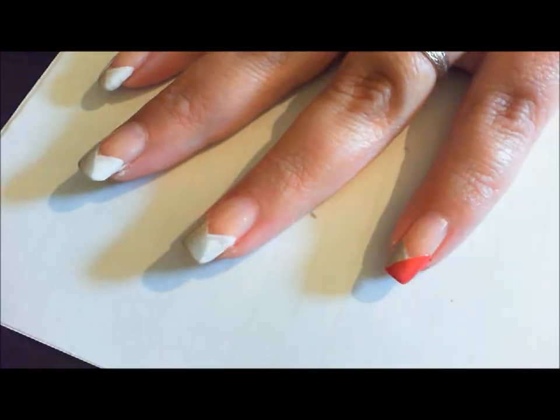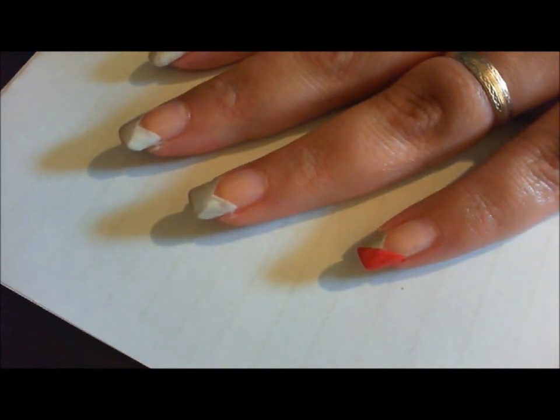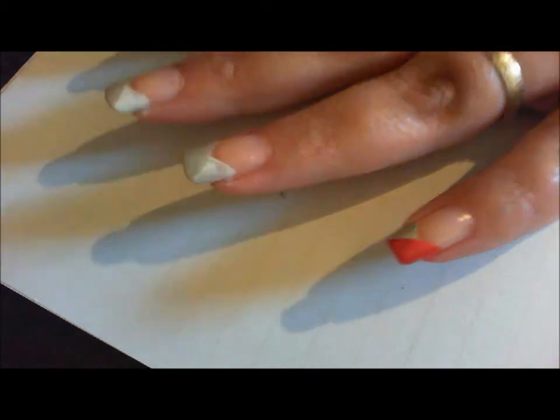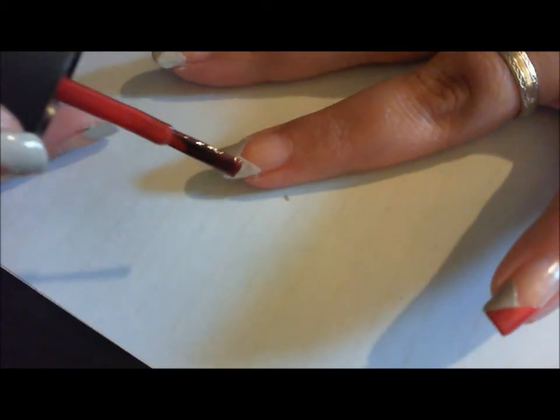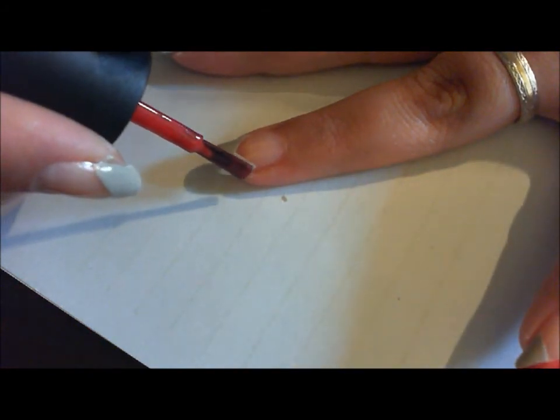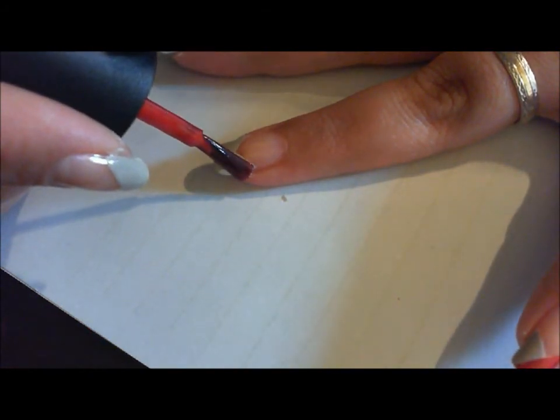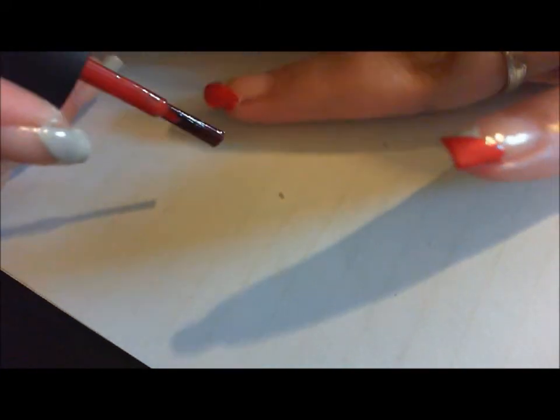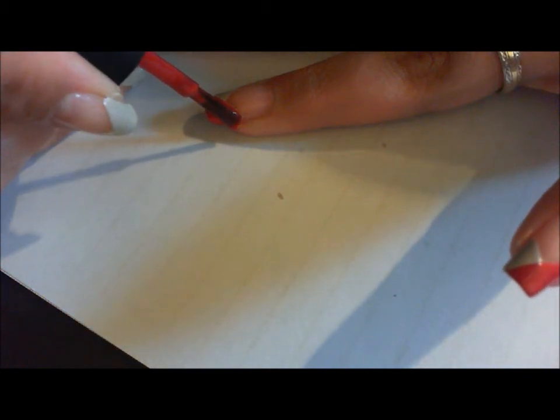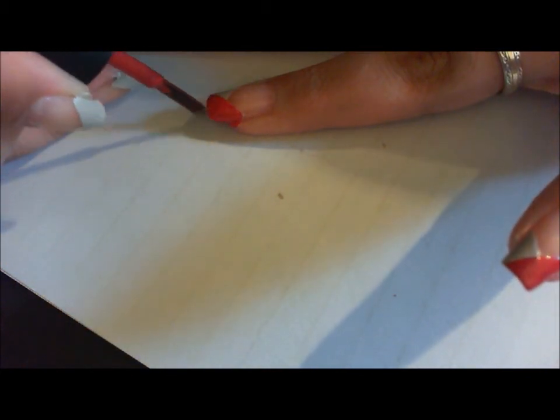Now this red is actually really good in terms of coverage. I don't usually have to apply two coats of this when I use it in this manner. If I was painting my nails with it like all one color, I probably would do two coats. And try to make sure that you do cover up all of your white. If you don't get all your white covered, that's all right because we're going to be embellishing further.